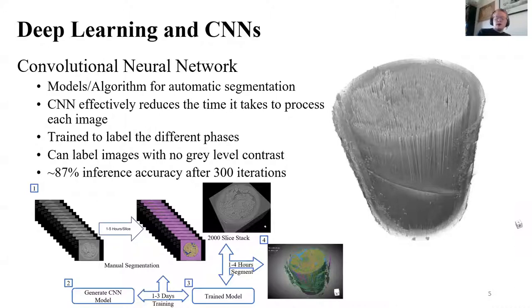The model is very good. You can train it to recognize different phases, different features in your samples, and it can also be used to label images with virtually no gray level contrast that might even be hard for a human to really tell the difference between fiber and matrix. I say here that we have around 87% inference accuracy after 300 iterations, but what does 87% accuracy really look like?